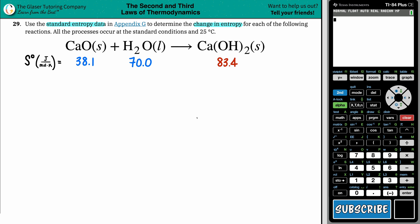In this case, we have the balanced equation. Calcium oxide, CaO solid, plus water, H2O liquid, will give us calcium hydroxide, Ca(OH)2 solid.